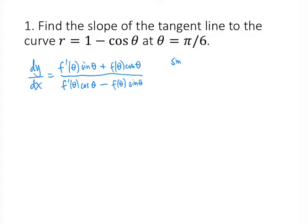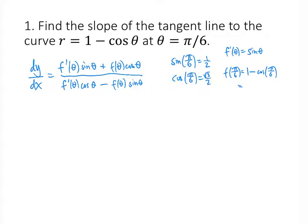First things first, we'll figure out sine of theta and cosine of theta. Sine of pi over 6 is 1/2, cosine of pi over 6 is square root of 3 over 2. Now the derivative of 1 minus cosine theta is positive sine theta. So f of pi over 6 is 1 minus cosine of pi over 6, which is 1 minus the square root of 3 over 2. And f prime of theta is just sine of theta, which is 1/2.